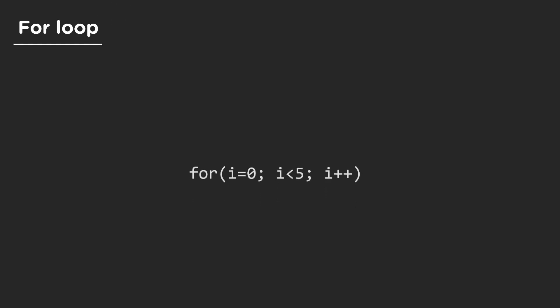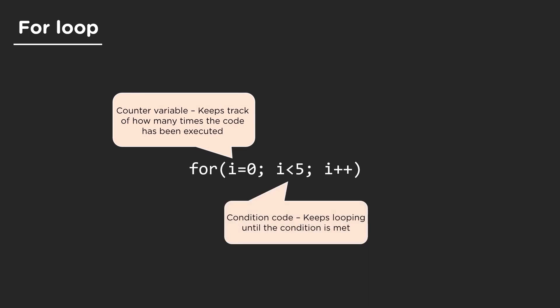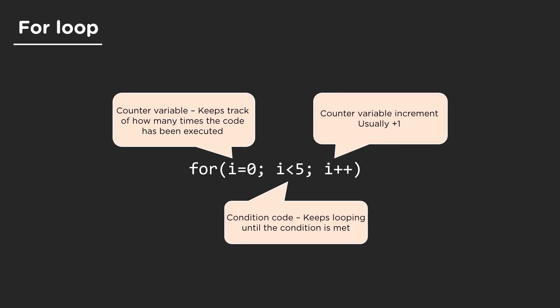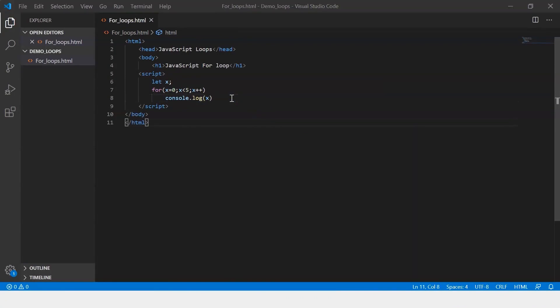What happens is you have the first variable, which is called the counter variable. This keeps track of how many times the code is being executed. Next, i less than 5 is a condition — the loop keeps executing as long as the condition is met. And lastly, the counter variable is incremented, usually by one. Inside the loop, we print the value of x.